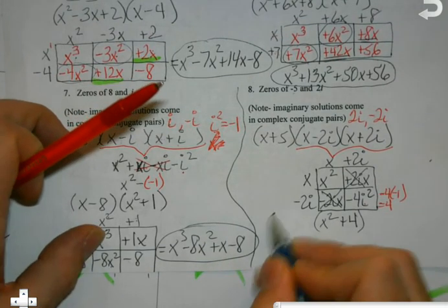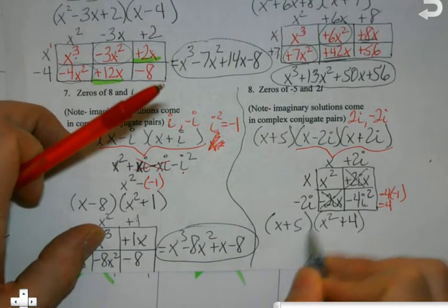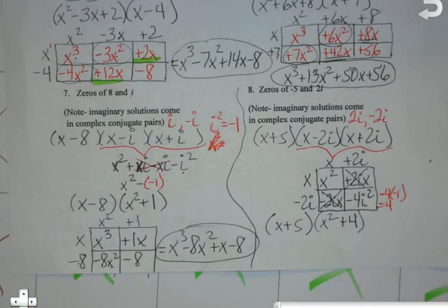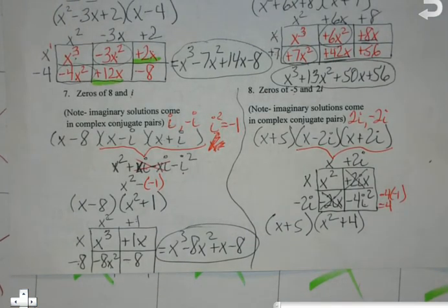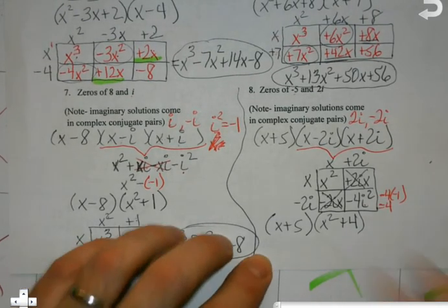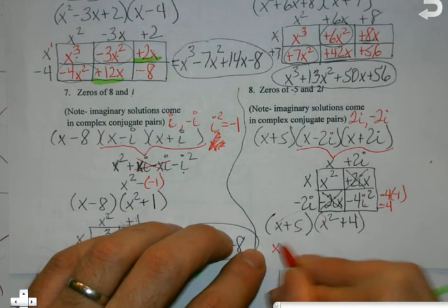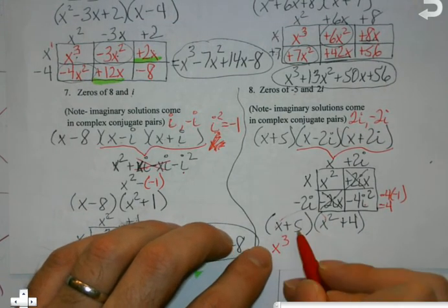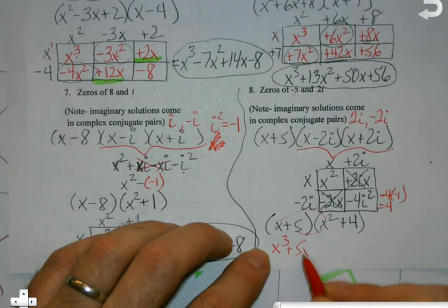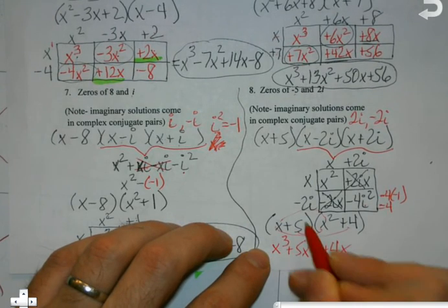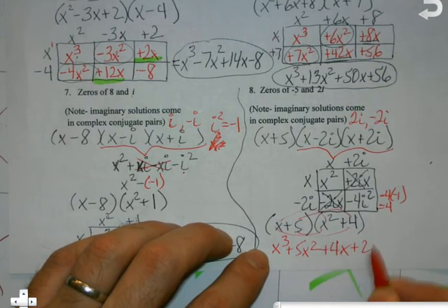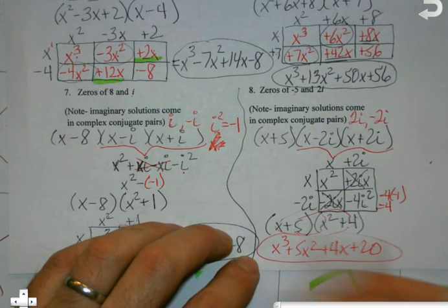But I still have to multiply it times the x plus 5. And I could box this up again if I wanted to, or some of you I know are more comfortable just saying, okay, so first I got x squared times x is x to the third, and I got a positive 5x squared, I got a positive 4x, and a positive 20. And I'm done that way.